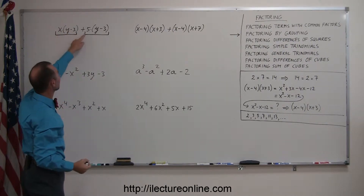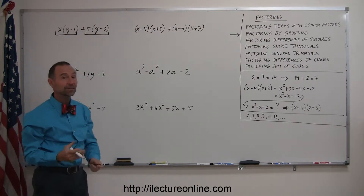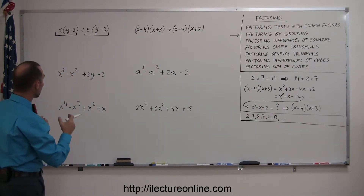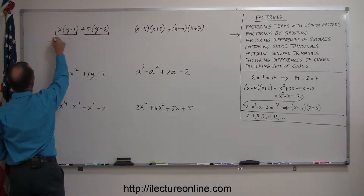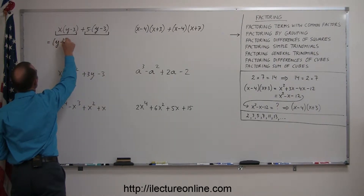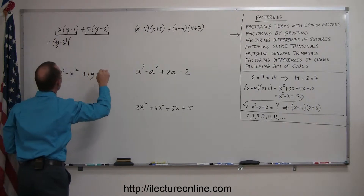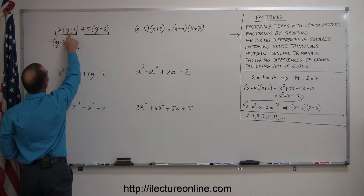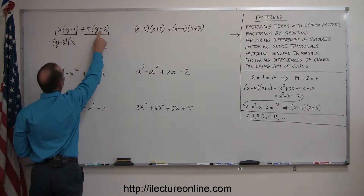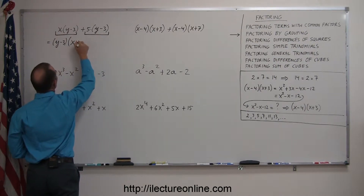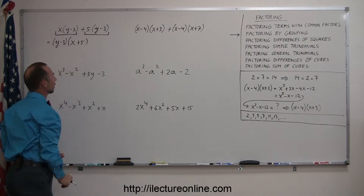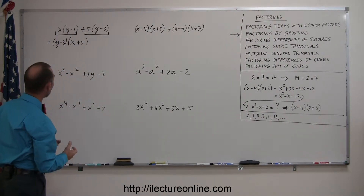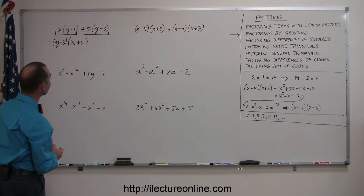In this case it's multiplied times an x, and here it's multiplied times a 5, which means I can factor out what's common between the two terms, which is (y minus 3). So I can write this as (y minus 3) and then multiply by what's left. If I divide this by (y minus 3), I have an x left, and if I divide this by (y minus 3), I have a 5 left. So the factored form is (y minus 3)(x plus 5).